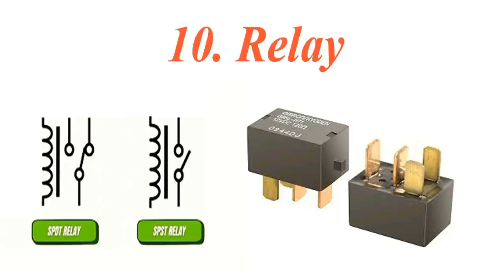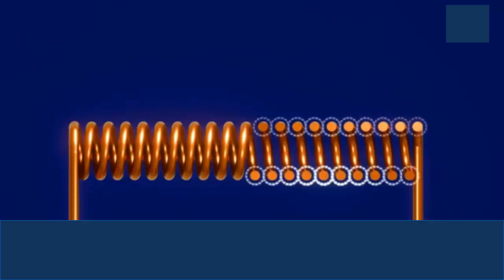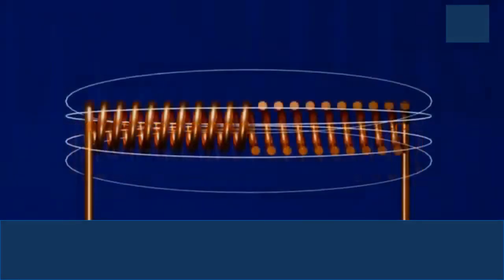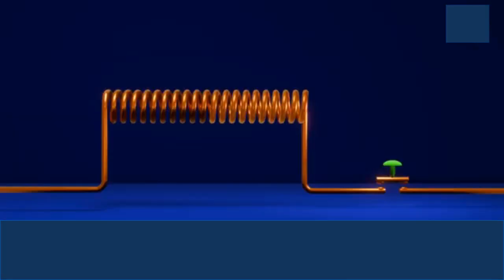Relays. A relay is an electrically operated switch. A relay works by using an electromagnet to open or close an electrical switch in a separate circuit.